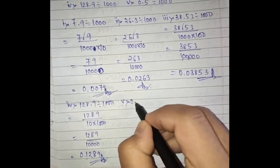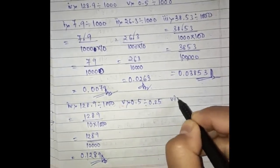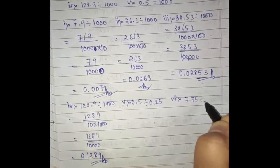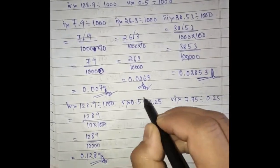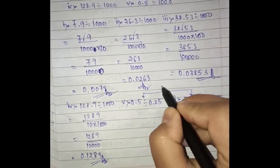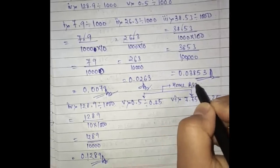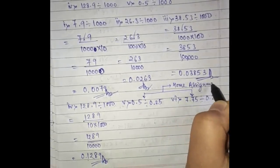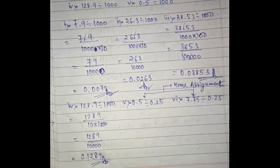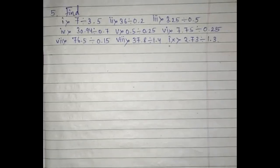Questions number five and six — 0.5 divided by 0.25, and 7.75 divided by 0.25 — I want you to do these yourself. This will be a home assignment. They are easy; try to do them the same way I have solved the others.